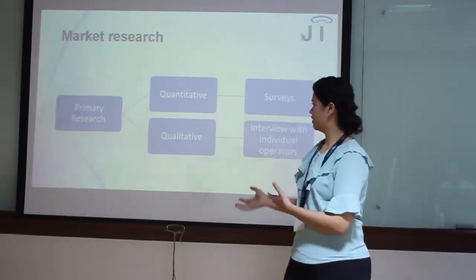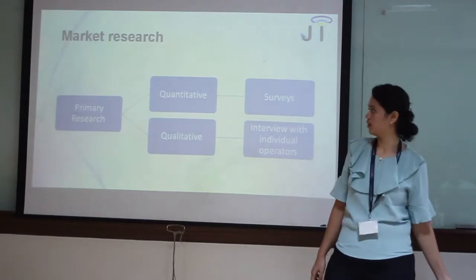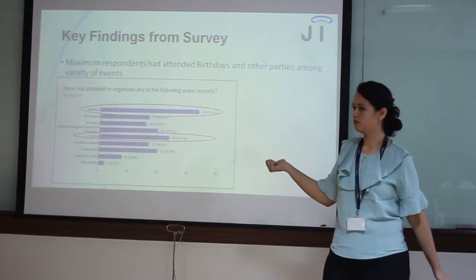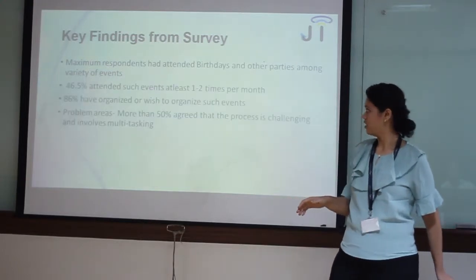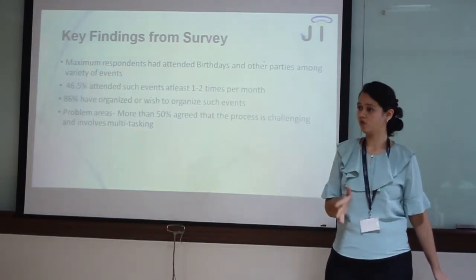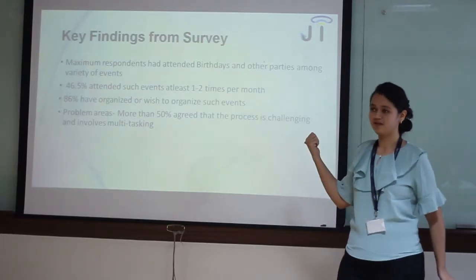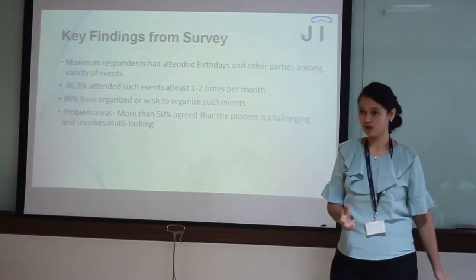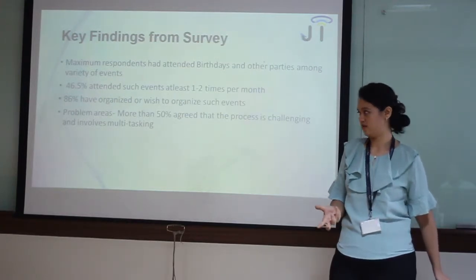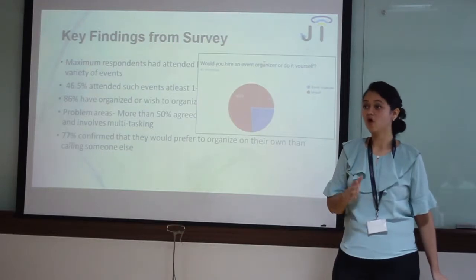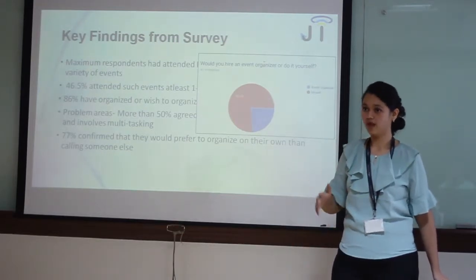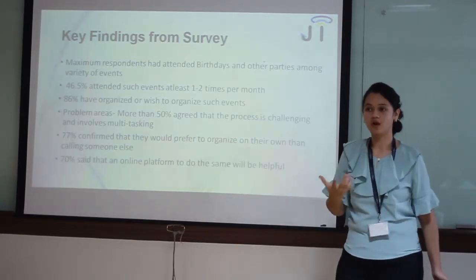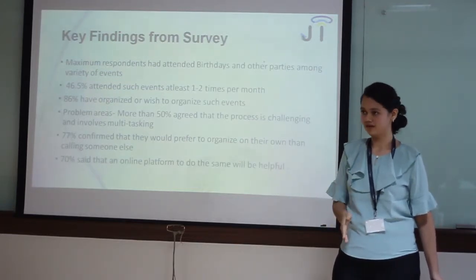In order to understand how this functions, we did market research — both quantitative and qualitative. In the surveys, we found that major events people go to are birthday parties and normal parties. The frequency of these events is about one to two per month, which means these are our potential customers. The major problem areas were that it was time-consuming and very challenging to organise events. When asked further, 77% said they organise events on their own, so these can be our next generation customers. We asked them if an online platform would be useful, and 70% agreed they would like the platform.